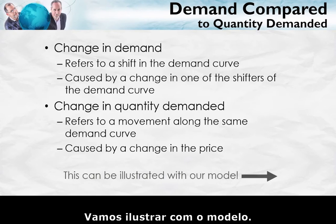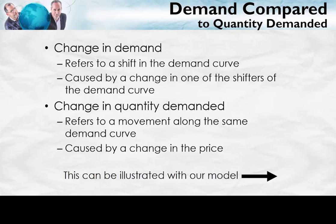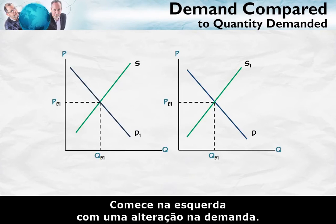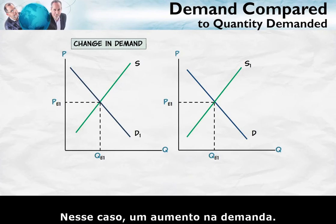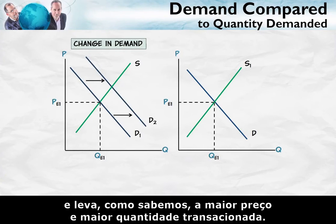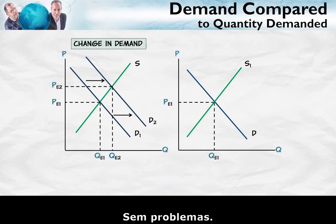Let's illustrate with the model. Begin on the left with a change in demand — in this case, an increase in demand. The increase in demand shifts the entire demand curve to the right or up, and leads, as we know, to a higher price and quantity exchanged.